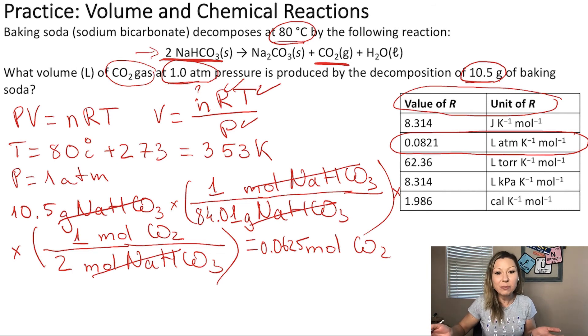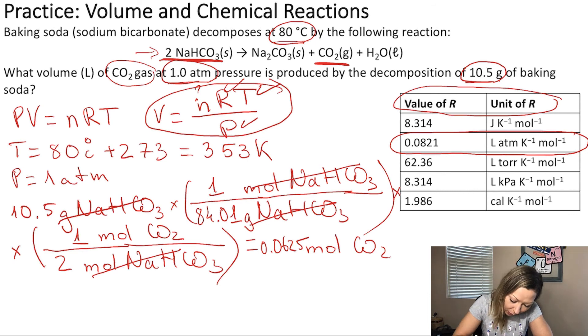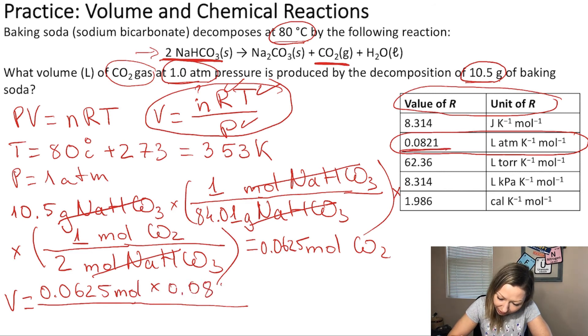The last step is simply plug everything into our equation up here. So, the volume equals to the number of moles, 0.0625 moles of CO2 multiplied by R, which is 0.0821 liter atm divided by Kelvin times mole. And this multiplied by the temperature, 353 K, and divided by the pressure, which is 1 atm.